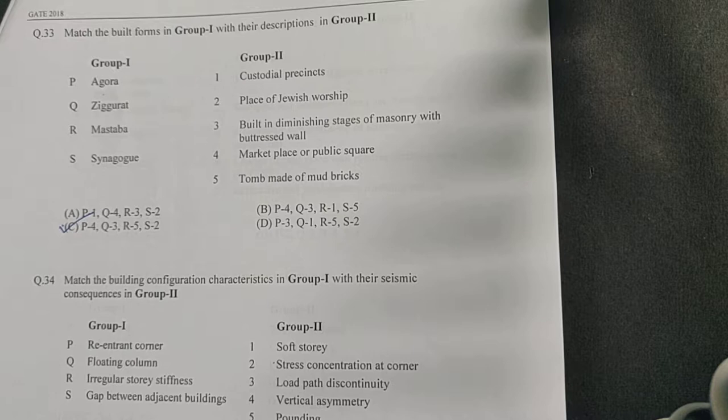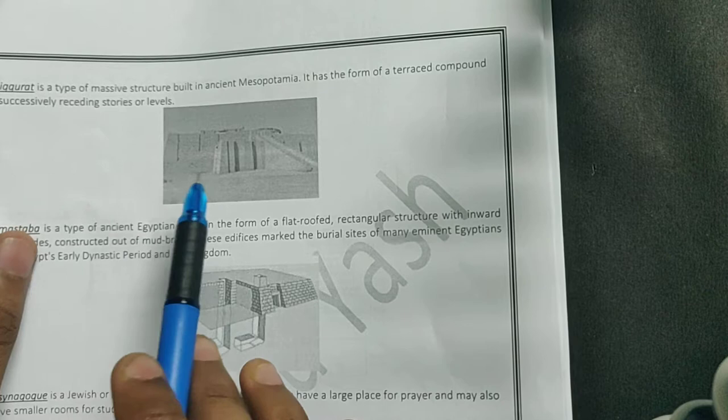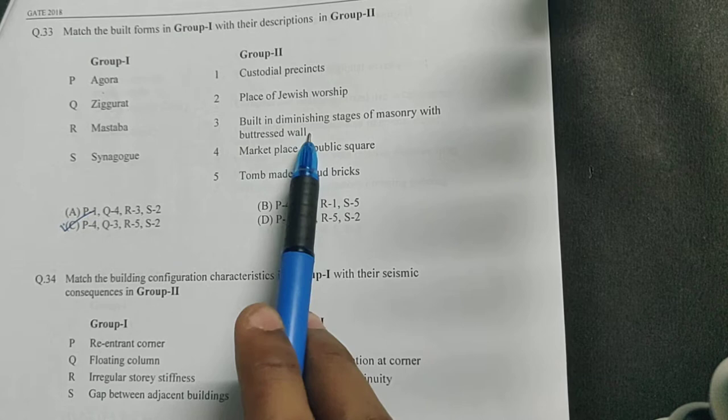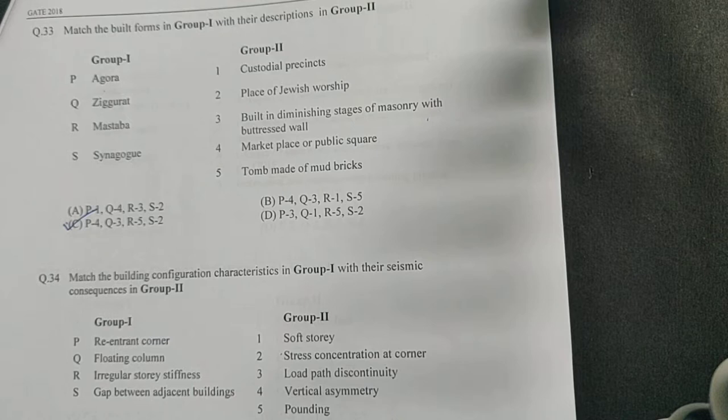Next is ziggurat. Ziggurat was seen in Mesopotamian architecture. It's a type of massive structure built in ancient Mesopotamia. The answer would be built in diminishing stages of masonry with buttress walls. What happens is your terraces get smaller and smaller and they are being supported by buttress walls and masonry.